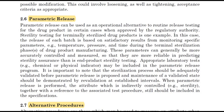Parametric release can be used as an operational alternative to release testing for drug products in certain cases when approved by the regulatory authority. Stability testing for terminally sterilized drug products is an example. In this case, release of each batch is based upon satisfactory results from monitoring specific parameters — temperature, pressure, and time during the terminal sterilization phase — which can generally be more accurately controlled and measured, providing more reliable sterility assurance results than end sterility testing.